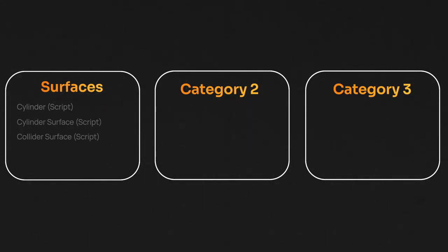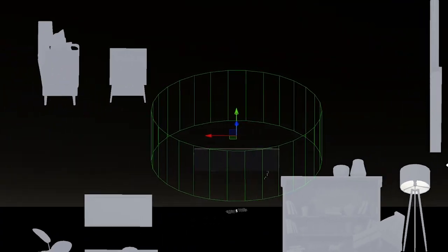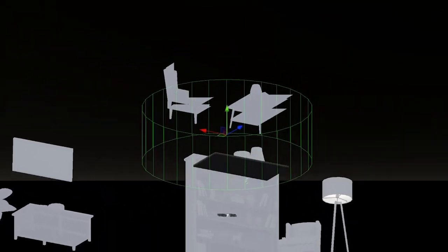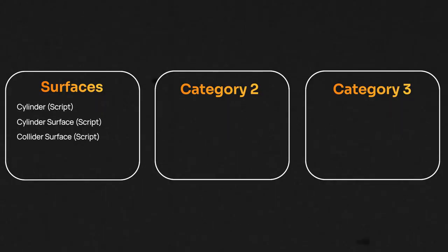The first category is the surfaces. These components create a geometric surface in 3D space. It acts as a collision surface for the interactors without having to rely on Unity's physics. The cylinder, cylinder surface, and the collider surface components create a cylindrical surface and make sure that the surface can be interacted with.